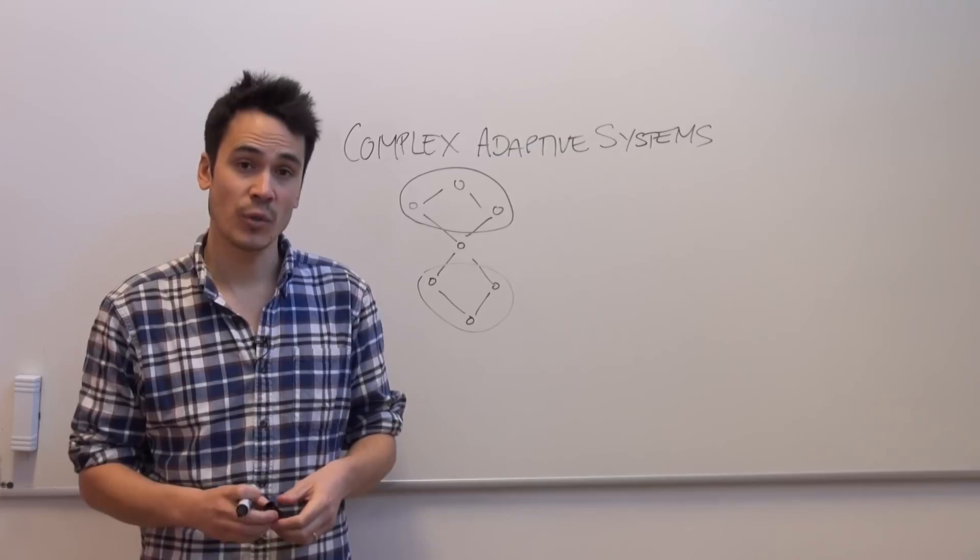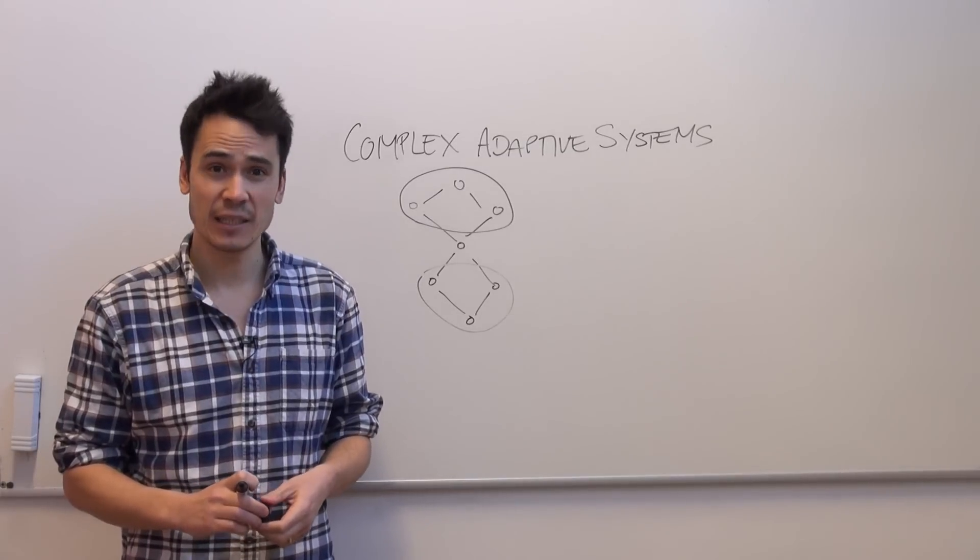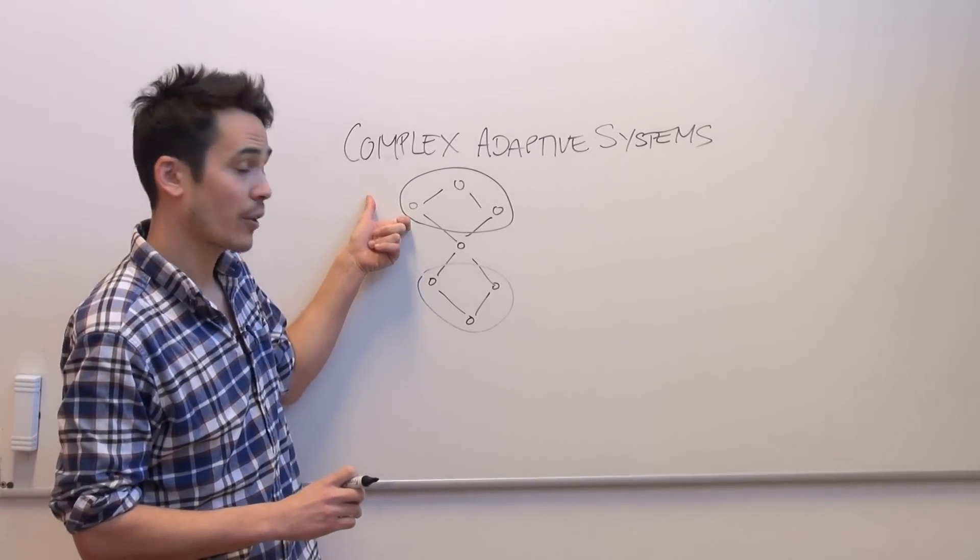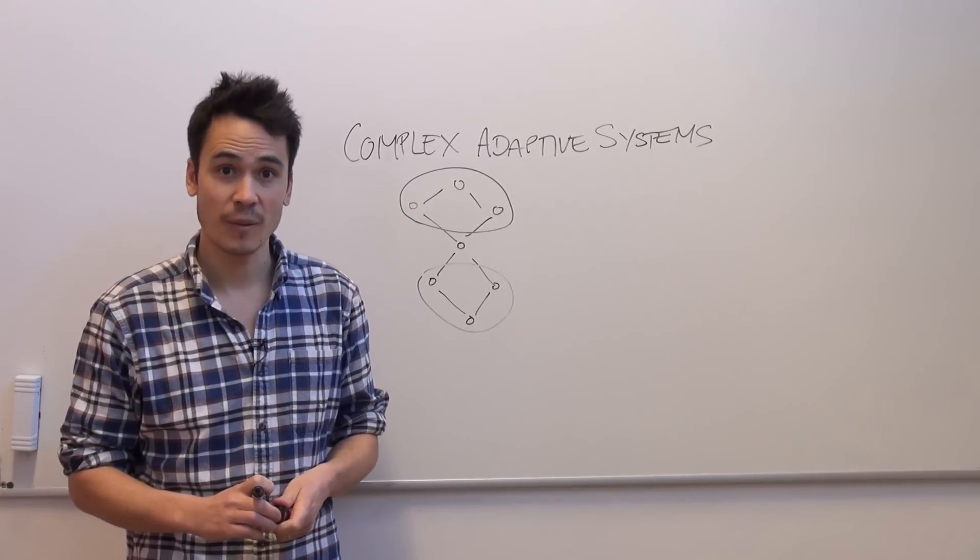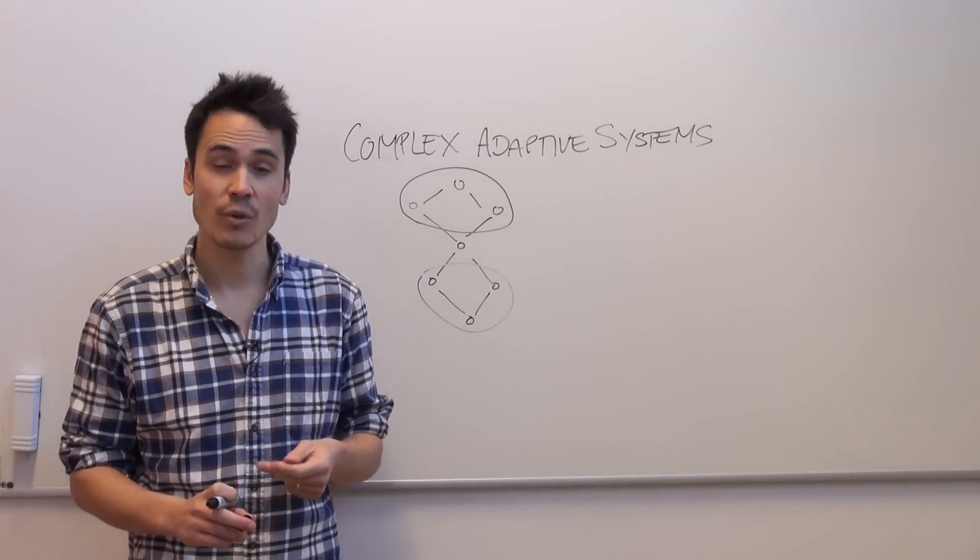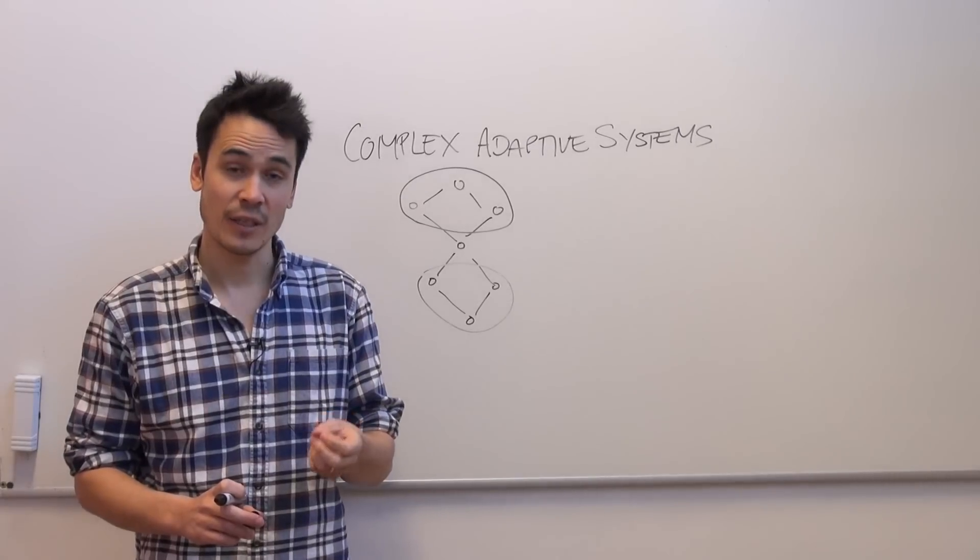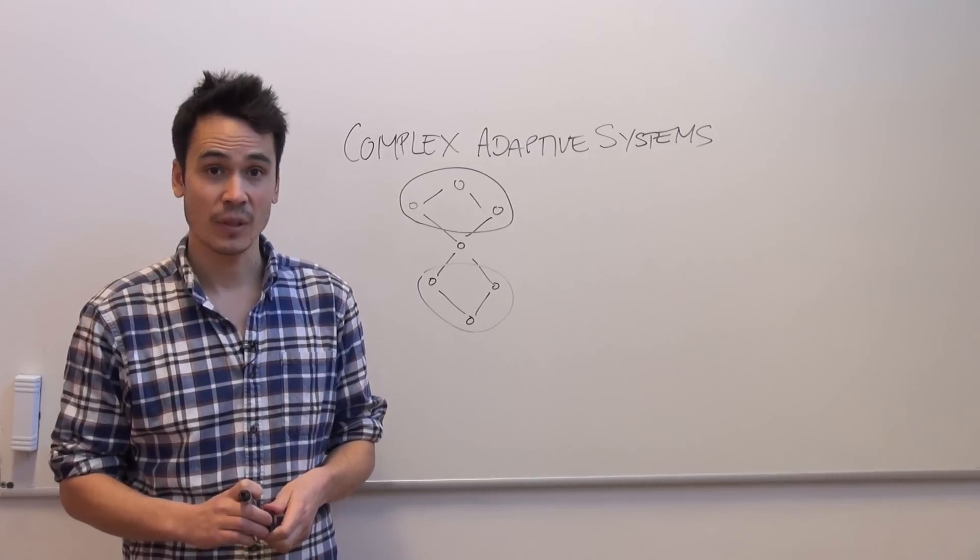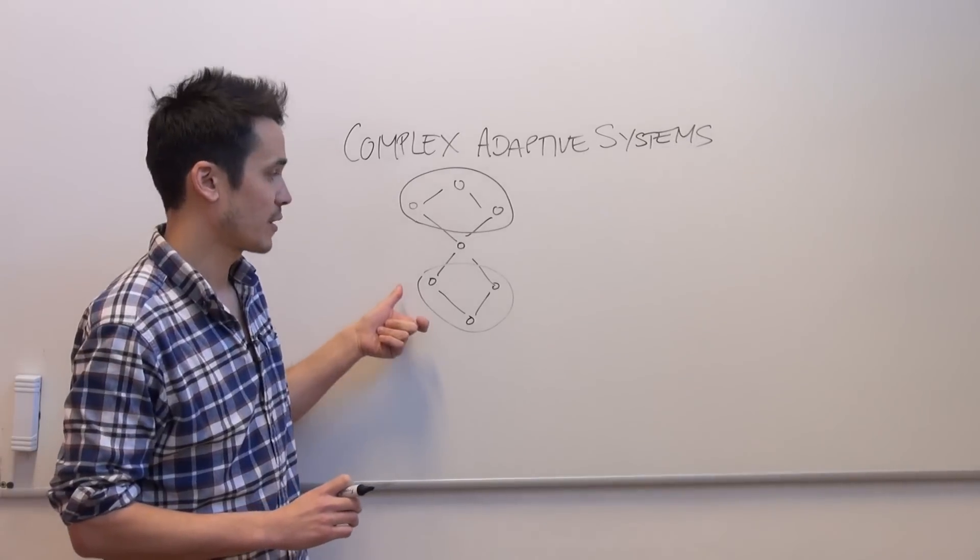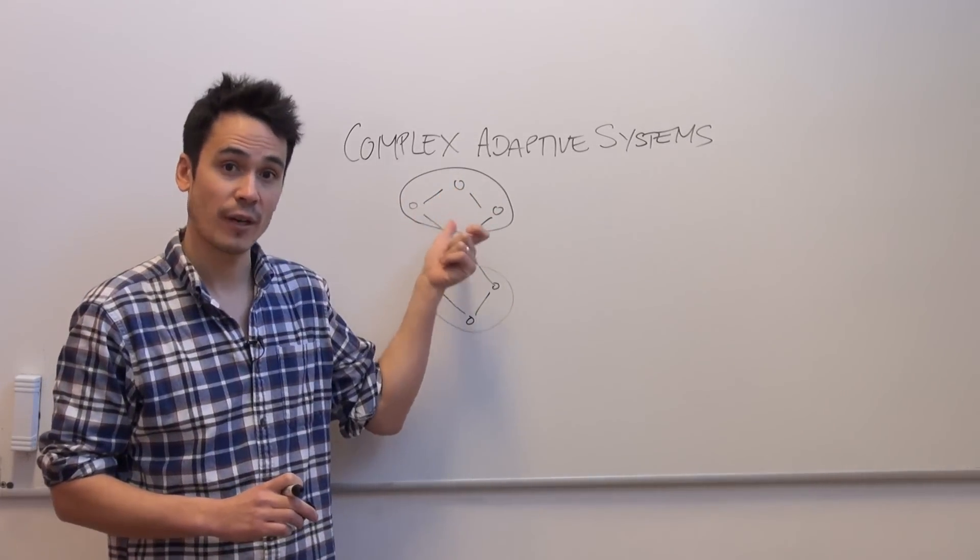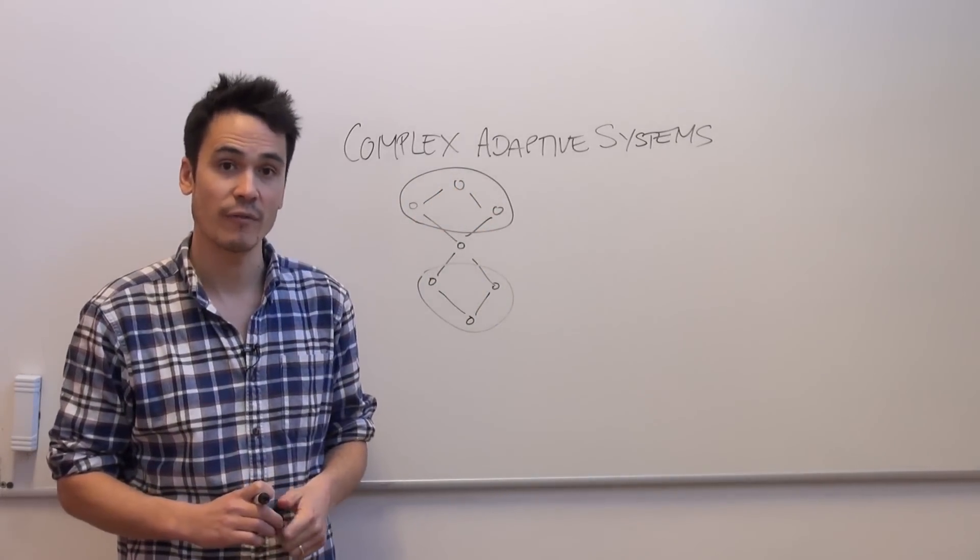Now going hand in hand with this modularity is often redundancy. So my friends at work and my friends at soccer do the same thing for me. Now together, modularity and redundancy lead to resilience. That's the ability for the system to withstand damage. I could alienate my friends at work, but I will still have a social network because my friends at soccer are somewhat separate from my friends at work.